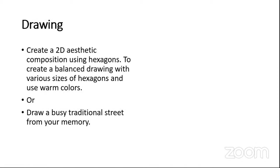The next question — sometimes predictable since most JEE questions include scene-based questions where you have to draw some kind of scene. Another important kind of question is to create a 2D composition. They will sometimes give a certain shape, and with that shape you have to compose an aesthetically pleasing 2D composition. There may also be restrictions, like a number restriction on how many times to use a shape. In this September session, the question was to create a 2D composition using hexagons — a balanced drawing with various sizes of hexagons — and you had to color the composition using only warm colors.